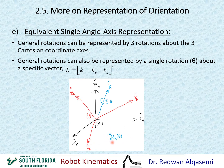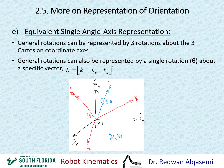So we call this rotation about axis K by the amount of theta. Either of these two approaches can be a general representative of rotation, but here we can do this with a single angle and single axis instead of having three different rotations.